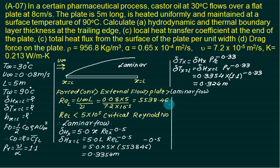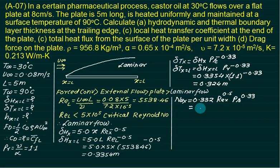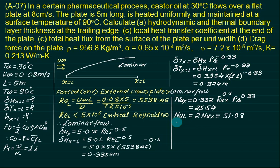Since the entire flow is laminar, we use the laminar forced convection flat plate correlation. The local Nusselt number is: Nu_x = 0.332 × Rex^(0.5) × Pr^(0.33). At x = L, Rex = ReL = 5538.46. Substituting, we get Nu_x = 25.54. For laminar cases, the average Nusselt number is always twice the local value: Nu_L = 2 × Nu_x = 51.08.